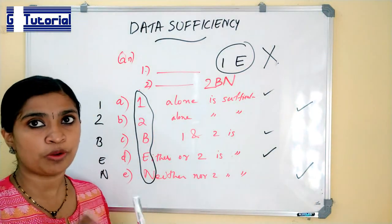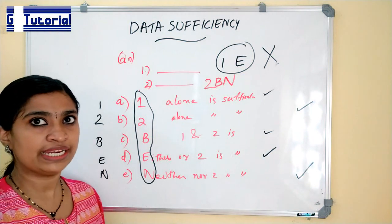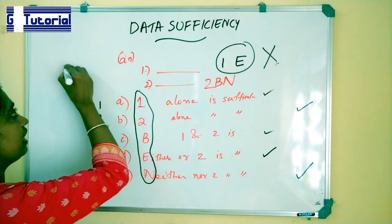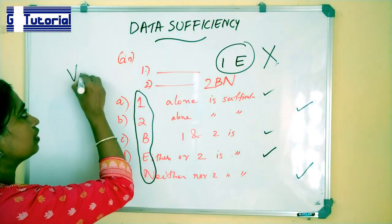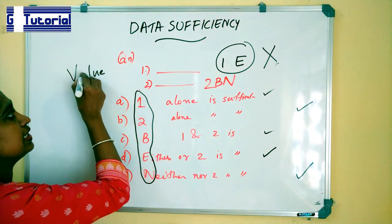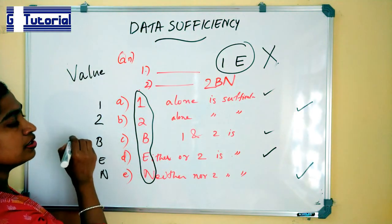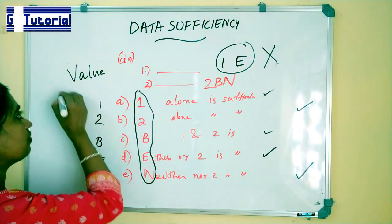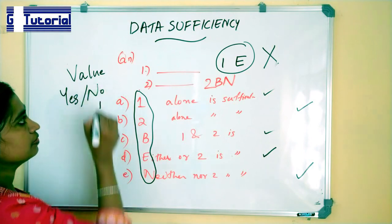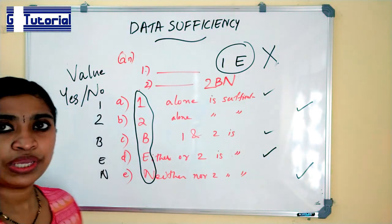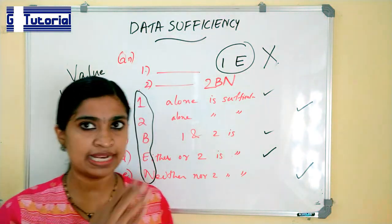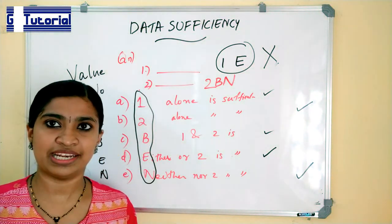Mainly two types of problems are asked from data sufficiency. One is you have to find the value of anything that is asked in the question, and the second type of question is a yes or no question. So now we can do some problems to understand these concepts very clearly.